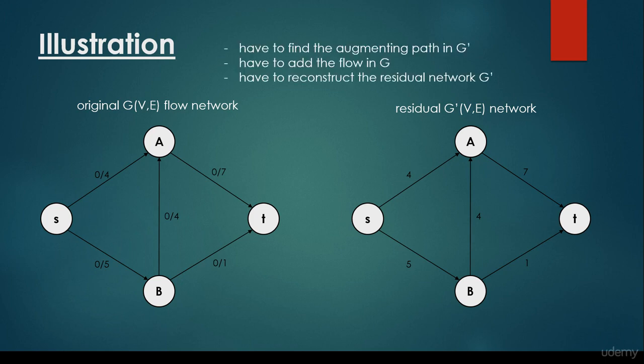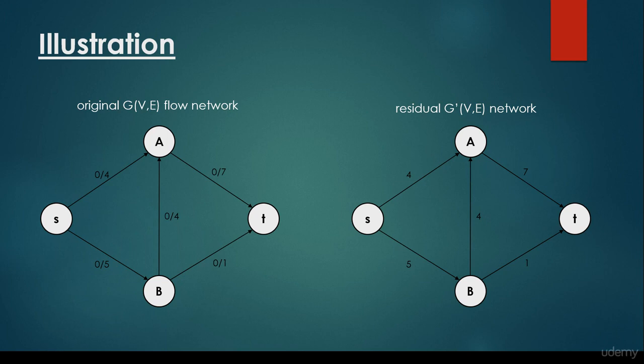What's the algorithm? We have to find the augmenting path in G prime — the residual network — then add the given flow in G, then reconstruct the residual network G prime accordingly. First, let's find the augmenting path. It's very important that we find the shortest path possible in the residual graph. It's going to be this path, so 5 plus 1 is equal to 6.